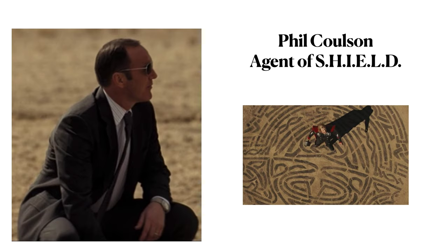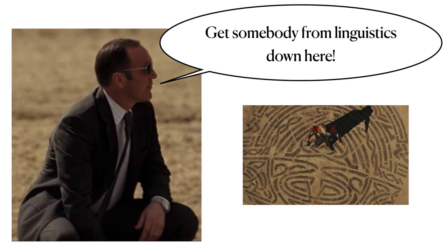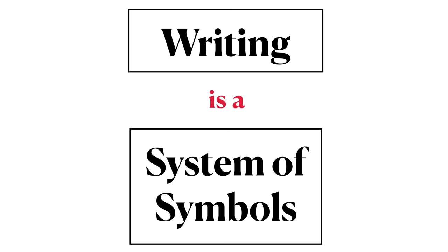In Marvel Studios' 2011 film Thor, the character Thor arrives in New Mexico on Earth from the realm of Asgard. His arrival is marked by a large circle on the ground filled with strange symbols. Midway through the film, Agent Philip J. Coulson arrives on the scene to investigate, along with other members of S.H.I.E.L.D. Coulson kneels down before the symbols, calling out, 'Get somebody from linguistics down here.' Coulson believes that S.H.I.E.L.D.'s linguists may be able to determine the meaning of the strange symbols.